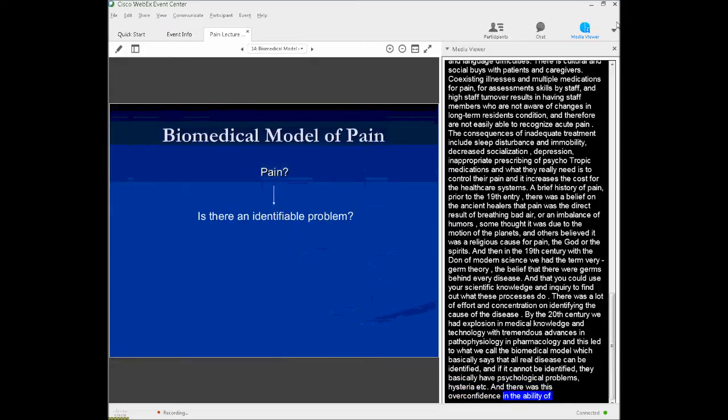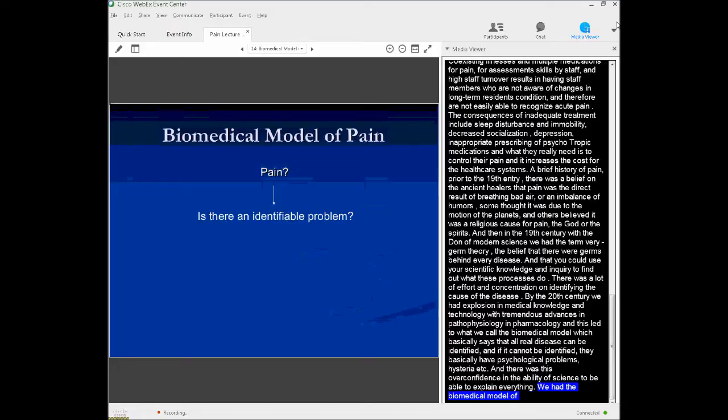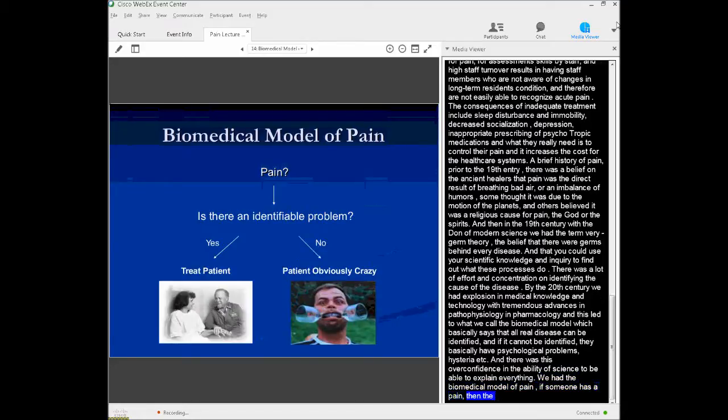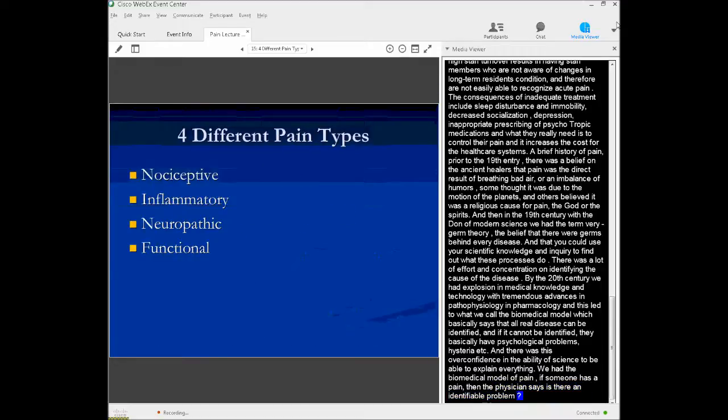By the 20th century, we had an explosion in medical knowledge and technology with tremendous advances in the fields of pathophysiology and pharmacology. And that led up to what we call the biomedical model, which basically said that all real disease can be identified and that if it couldn't be identified, then the patient basically had psychological problems, hysteria, etc. And there was this profound confidence, actually overconfidence, in the ability of science to be able to explain everything. So just in a brief schematic form, we have the biomedical model of pain. If somebody has pain, then the physician says, well, is there an identifiable problem? And if there is, then you would go ahead and treat the patient. And if it's not, then they're obviously crazy.